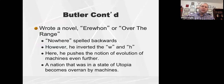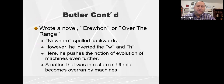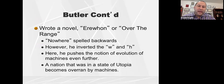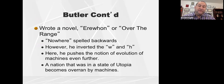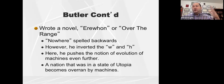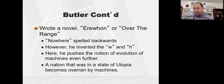Butler wrote a novel called Erewhon, or Over the Range — Erewhon is a play on the word 'nowhere,' with the W and H inverted. He pushed the concept of the evolution of machines even further, suggesting that eventually society would be overrun by machines — a fear that the instructor doesn't share, but one of Butler's major concerns.